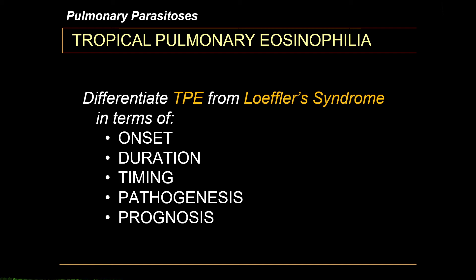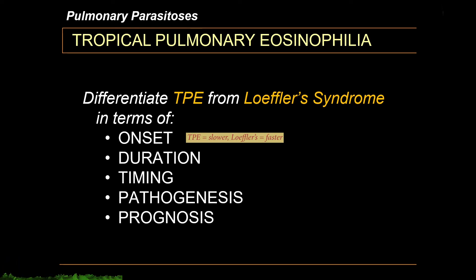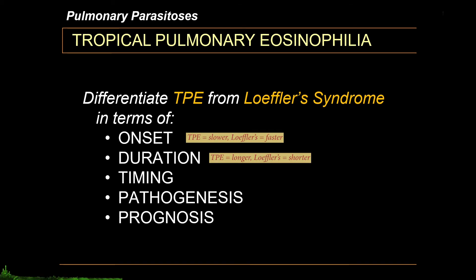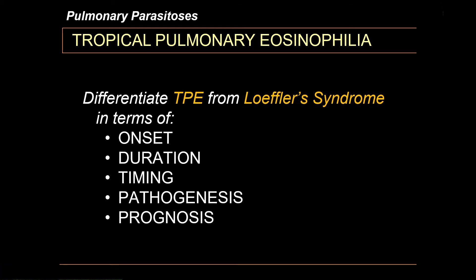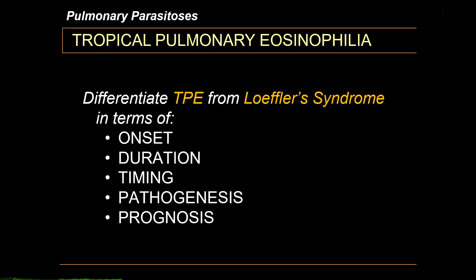For example, the onset of TPE is usually slow, taking days, weeks, or even months to develop, while Loeffler syndrome onset is rather rapid. The duration of TPE can last up to several months, while Loeffler syndrome lasts only 2–3 weeks. One is worse at night while the other has no particular preferred timing. One is caused by the immune response to chronic microfilaremia, while the other is caused by acute infection during a specific phase of the parasite's life cycle. As for prognosis, one is chronic and one is self-limiting.